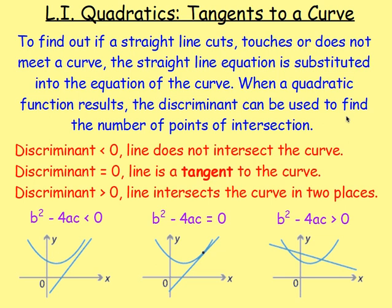Another purpose of the discriminant: it can determine whether a line touches a curve. If the discriminant is less than zero, the line does not intersect the curve. If it equals zero, the line is a tangent to the curve — one point of contact. If it's greater than zero, the line intersects the curve in two places.